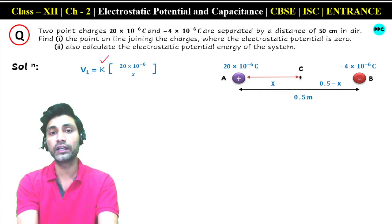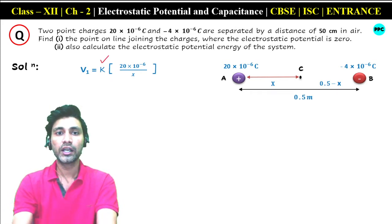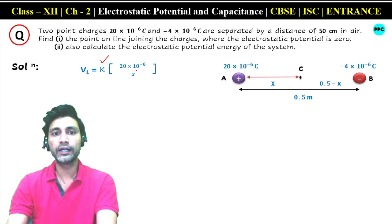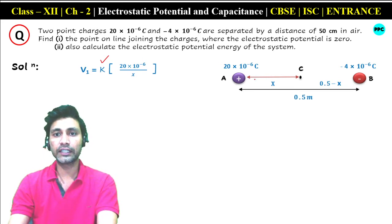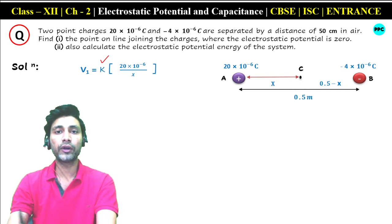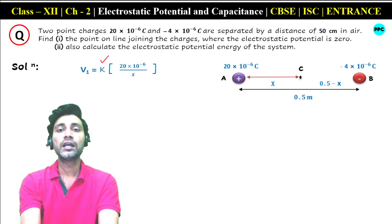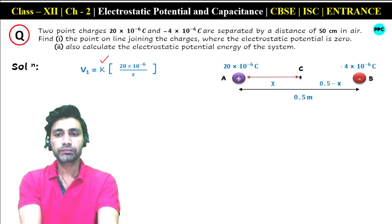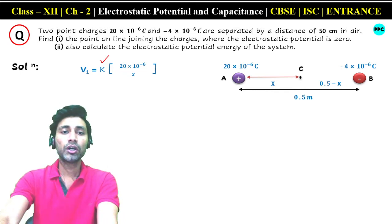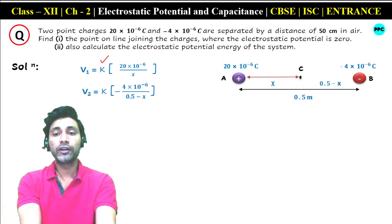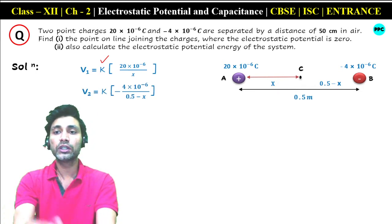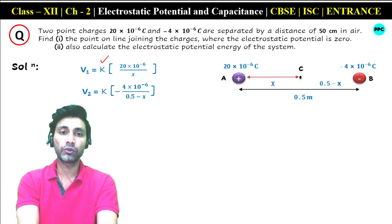The value of K is 9×10⁹. The charge value here is 20×10⁻⁶ coulomb, and for R we place X — that is, the distance of point C from point A where this charge is situated. Then I calculated V2, i.e., the potential at point C due to the charge minus 4×10⁻⁶ coulomb.